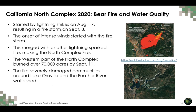The North Complex or Bear Fire started in August — specifically, a lightning strike on August 17th started the fire, which eventually resulted in a firestorm on September 8th. Due to the fire, there was onset of intense winds and another lightning-sparked fire, which merged with the existing fire. The western part of this North Complex Fire burned over 70,000 acres by September 11th and severely damaged communities around Lake Oroville in the Feather River watershed.